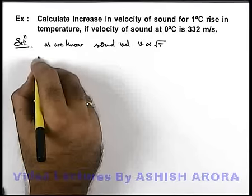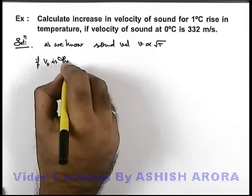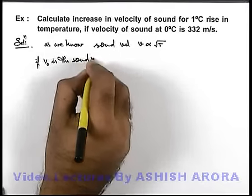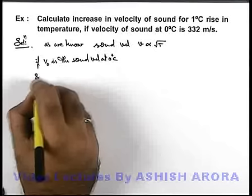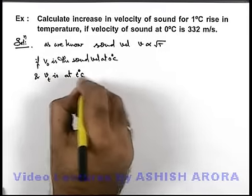So we can write, if v not is the sound velocity at zero degree centigrade, and v t is at t degree centigrade.